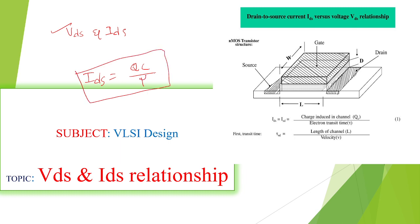So this is the relation, but I need to explain this clearly. The induced charge at the channel and the electron transit time — how much time the electron takes to move from one end to the other. So IDS can be defined as the induced charge at the channel Qc divided by the electron transit time tau.